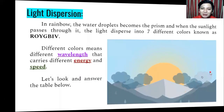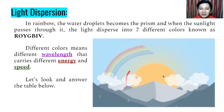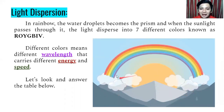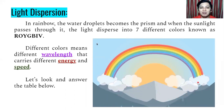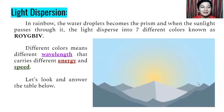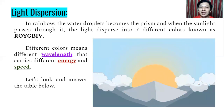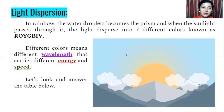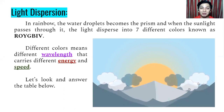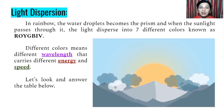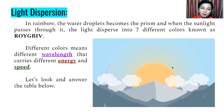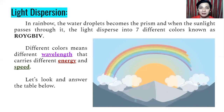For example, the rainbow: it rains, then the sun shines again, and the rainbow comes in. In the rainbow, the water droplets become the prism. When sunlight passes through them, the light disperses into seven different and beautiful colors known as ROYGBIV — red, orange, yellow, green, blue, indigo, and violet. Those are the seven beautiful colors that appear in the rainbow.